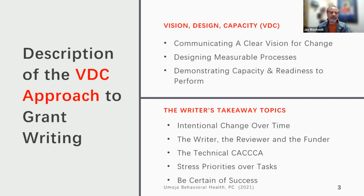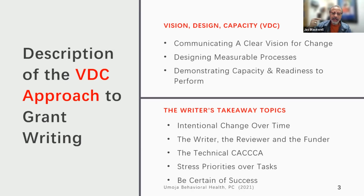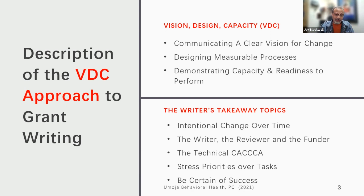Vision — what's your vision for change? Design — how are you going to do it, what verbs are you going to use? And then Capacity — there is always a component that asks, how do we know as a funder that your agency is the best agency to receive this money? You need to demonstrate expertise, connection to the community, a place or space, and the drive. This is still based upon your verbs and your words — how you craft what you want to tell a funder.